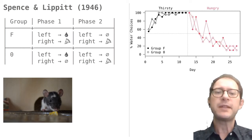But Spence and Lippitt found that every single rat in group F continued to go toward the water the first time they were put in the maze hungry.